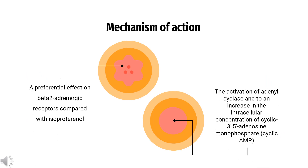Mechanism of Action. The pharmacologic effects of Bambuterol are at least in part attributable to stimulation through beta-adrenergic receptors, specifically beta-2 receptors, of intracellular adenyl cyclase — the enzyme that catalyzes the conversion of adenosine triphosphate, ATP, to cyclic AMP.